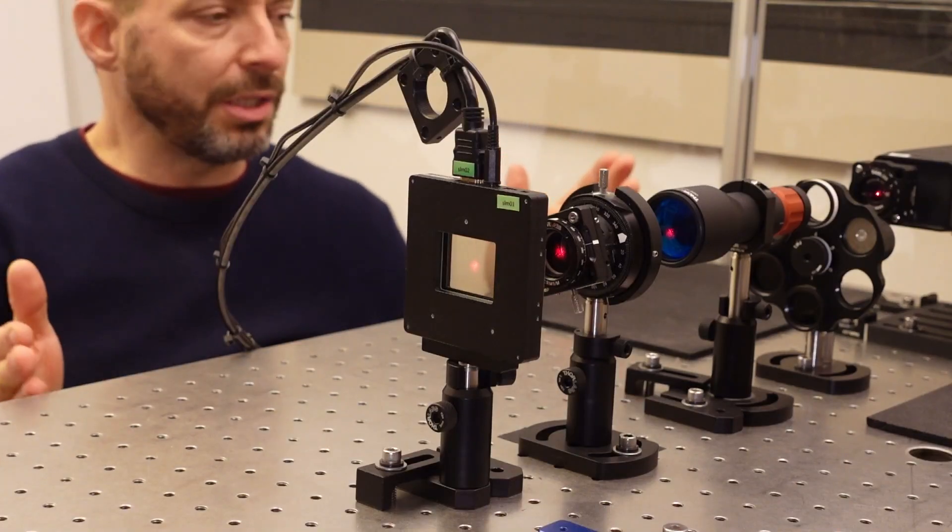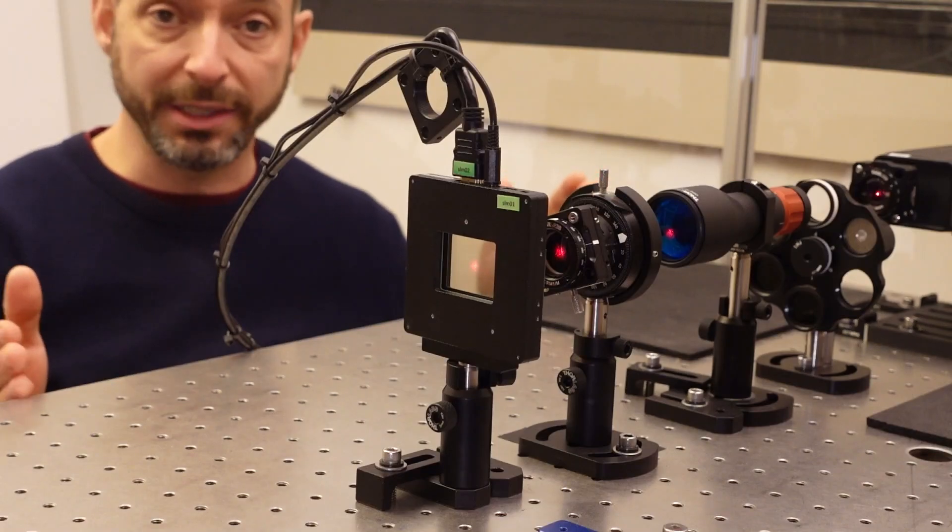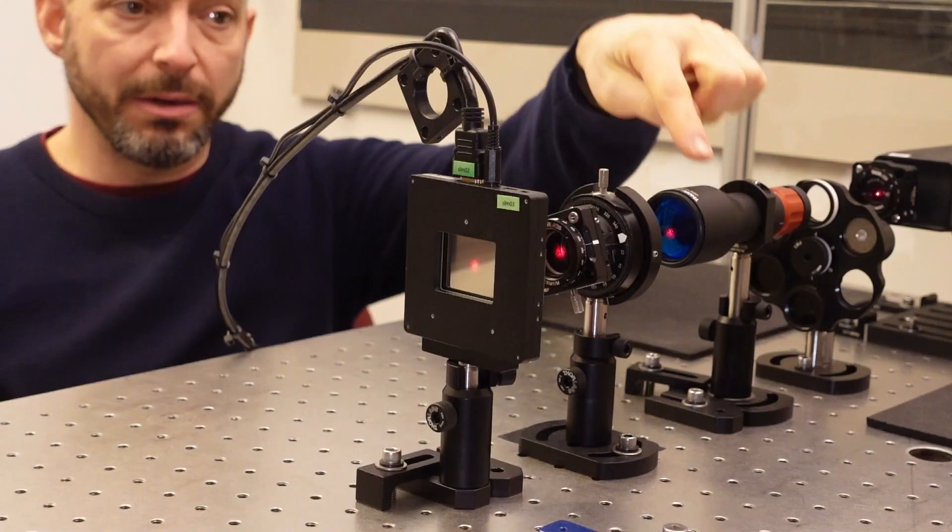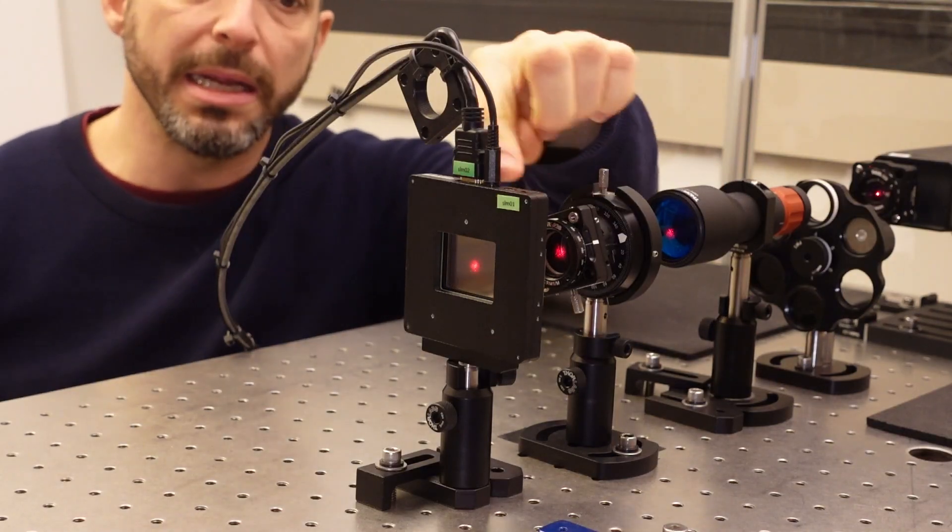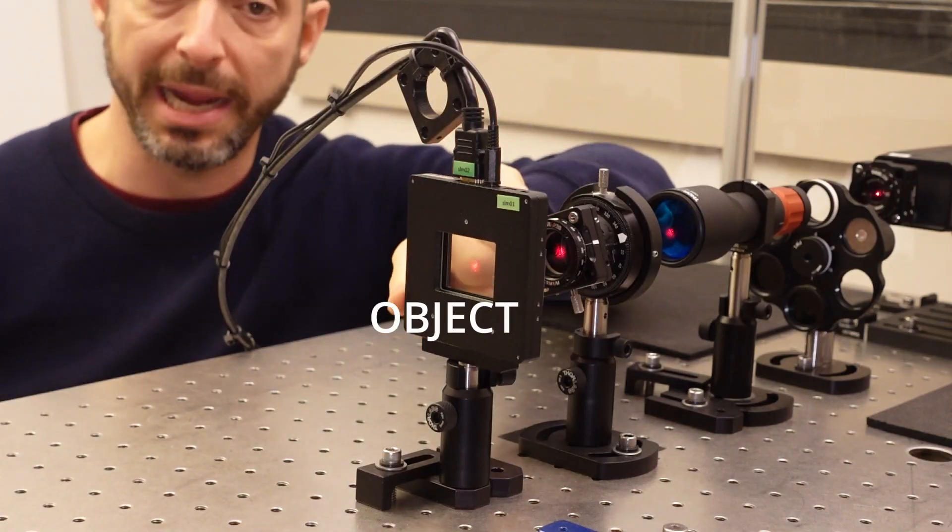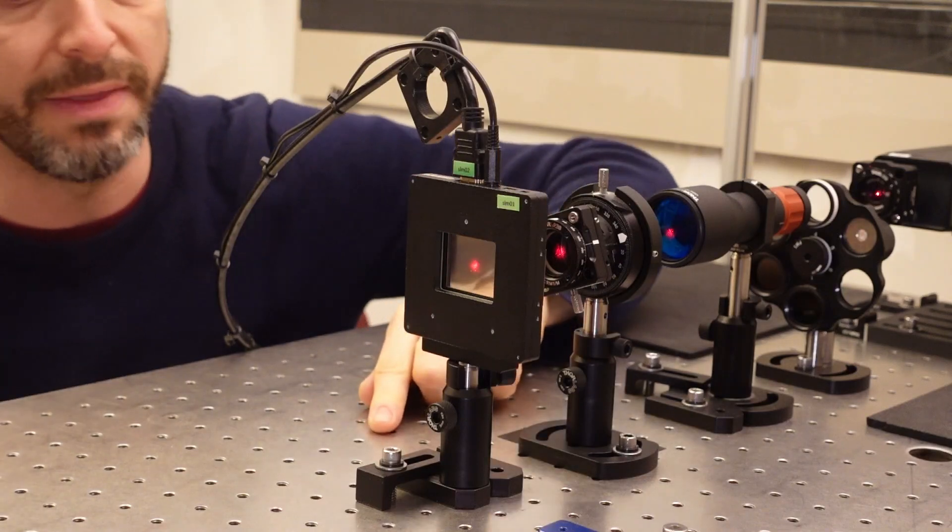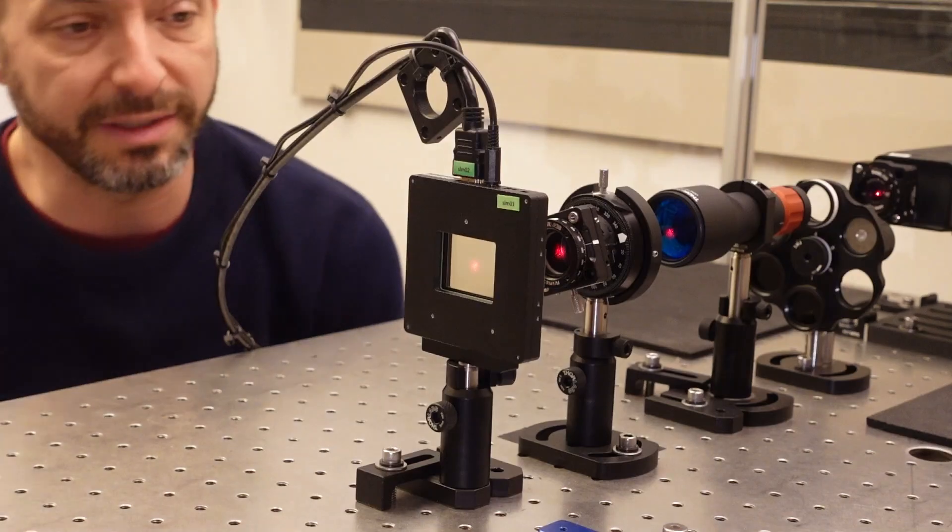On this optical bench, we have set up here a holographic projector. So this is a laser source, and this is a beam expander, and this sets the polarization. And this element here is the holographic projector display. This is also called a spatial light modulator.